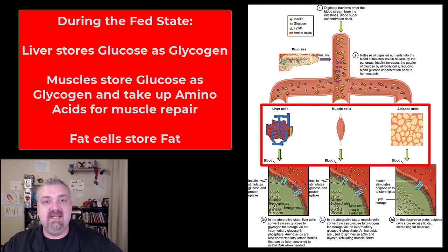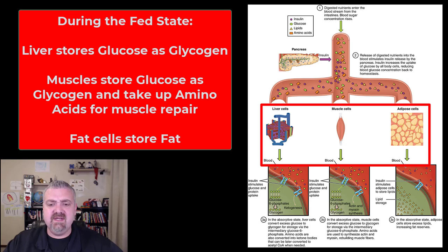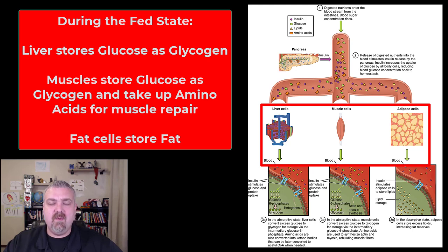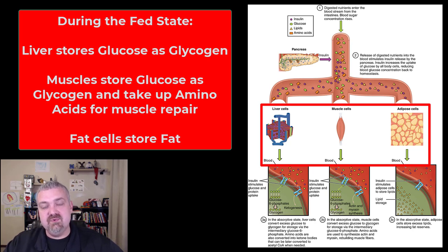At the liver, the key thing that happens is excess glucose not being used for fuel elsewhere will be stored as glycogen — the storage form of carbohydrate in the human body. You can also see some extra amino acids being converted into ketone bodies, potentially if you are on a higher protein diet. Muscle cells do the same thing: they take in glucose, use some for fuel, and store some as glycogen. Insulin also leads muscle cells to absorb amino acids and use them to build muscle.